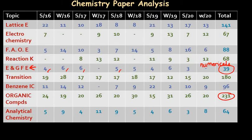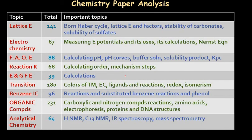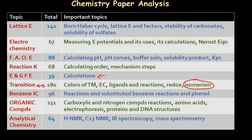The highest marks are carried by Organic Compounds, though that is a mixture of three chapters. Transition Elements carried 180 marks — a very high number. Let's look at the important sub-topics. For Entropy and Gibbs Free Energy, only calculations are asked, and they are very easy to score. For Transition Elements, in each and every paper questions about isomers are always asked, so you should definitely know how to draw the isomers of transition element complexes.